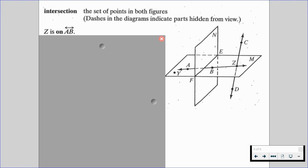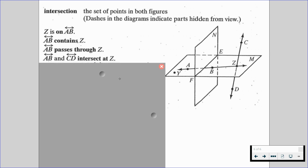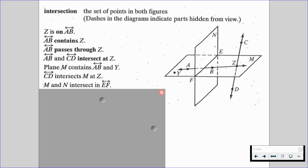A couple of things to notice is that point Z is on line AB. Line AB contains point Z. Line AB passes through point Z. Lines AB and line CD intersect at point Z. Plane M contains line AB and point Y. Line CD intersects plane M at point Z. Plane M and plane N intersect at line EF. Line EF is the intersection of planes M and plane N. Planes M and N contain line EF.